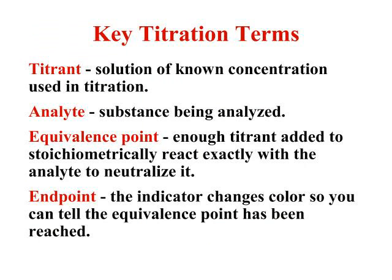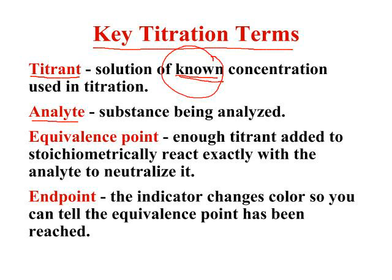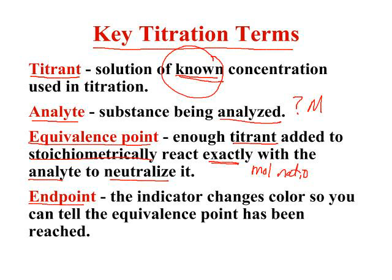Let's look at the key terms. A titrant is the solution of known concentration being used in the titration — this is the substance whose molarity you know. The analyte is the substance being analyzed; you do not know its molarity — that is what you're trying to determine. The equivalence point is when you have added enough titrant to stoichiometrically react in the correct mole ratio with the analyte to neutralize it. The end point is similar but is the point at which the indicator changes color, so you can tell the equivalence point has been reached. You pick an indicator where the end point and equivalence point will be the same.